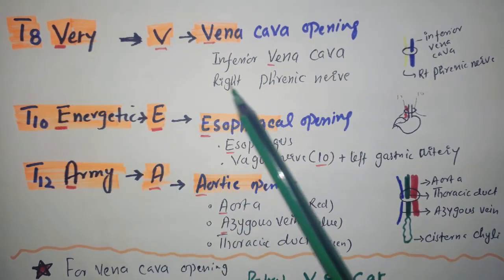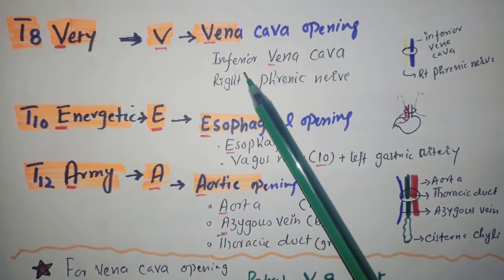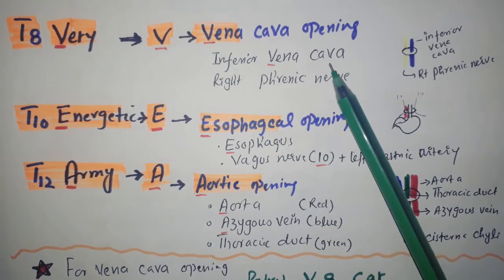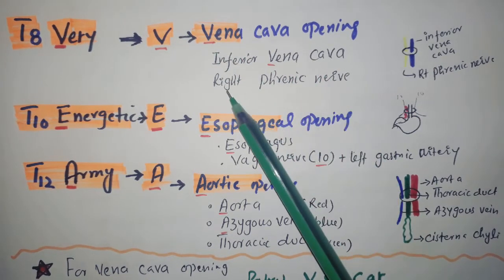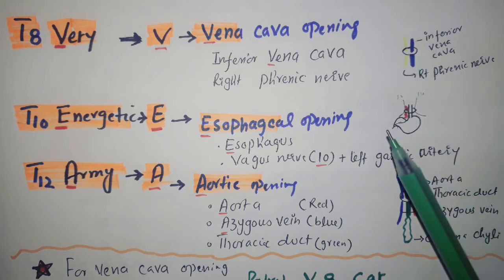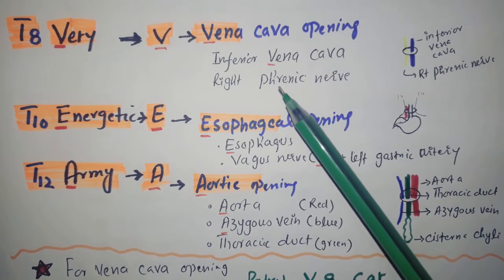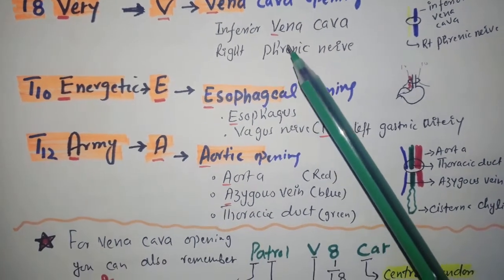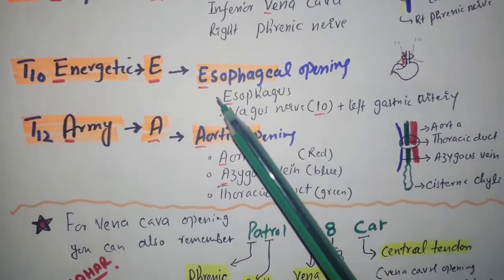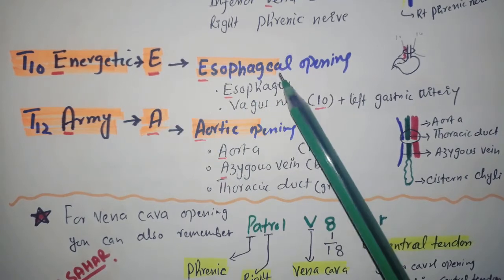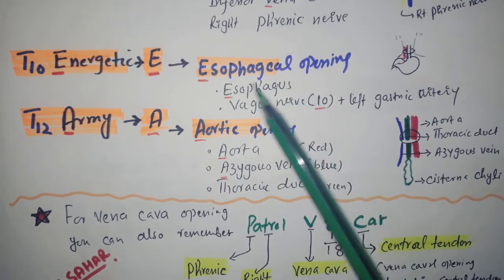The inferior vena caval opening is located at the T8 vertebral level, and it transmits the inferior vena cava and the right phrenic nerve.